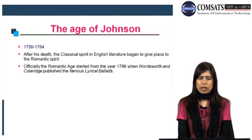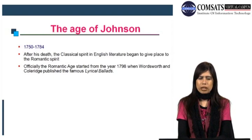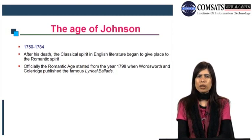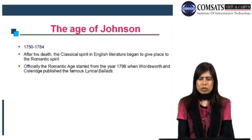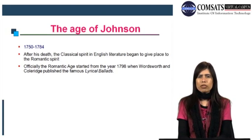The Age of Johnson comprised a long period in the history of English literature. After this, the classical spirit in English literature began to give rise to the romantic spirit. So here you will see a transition phase from the classical age to the romantic age. The romantic age officially started from 1798 when Wordsworth and Coleridge published the famous Lyrical Ballads — that was the first publication after which the romantic spirit got its place in English literature.